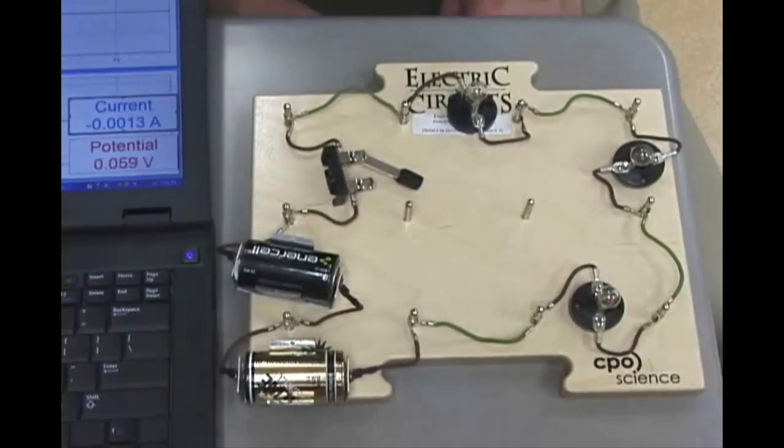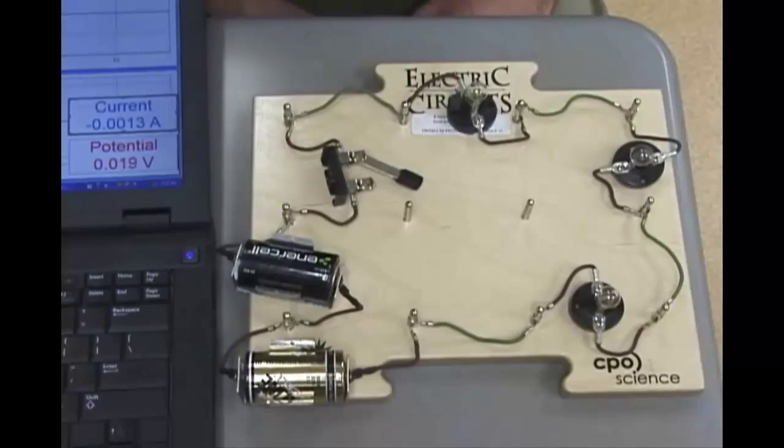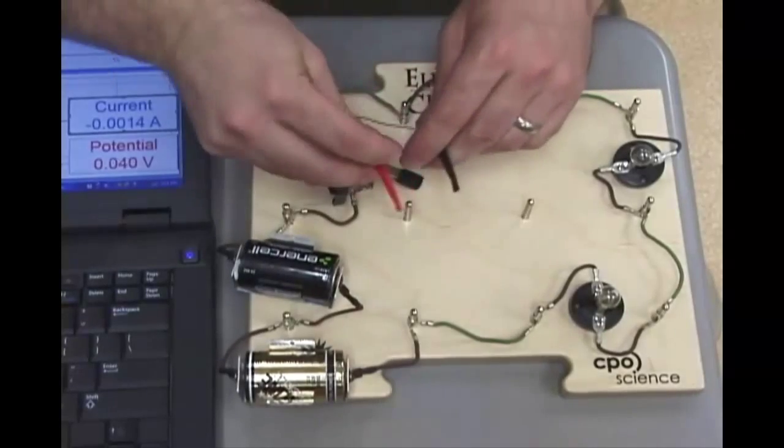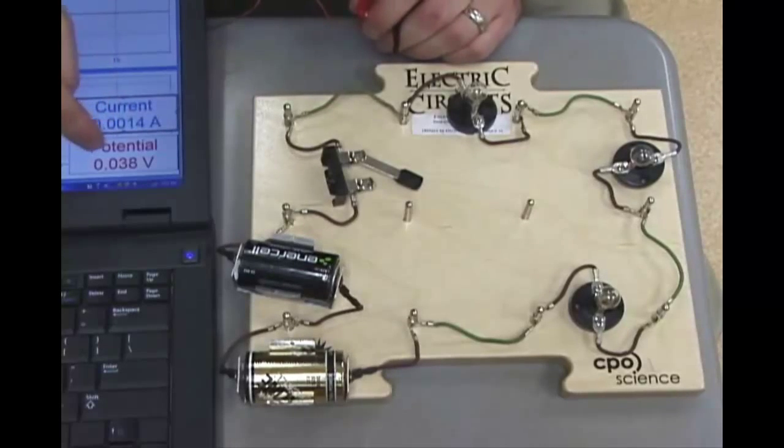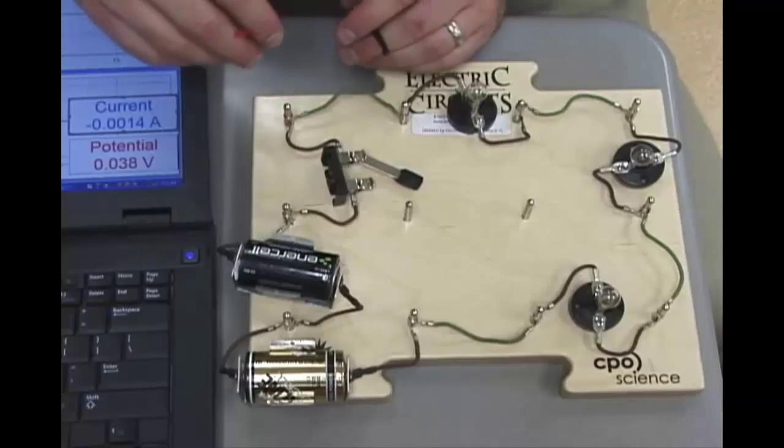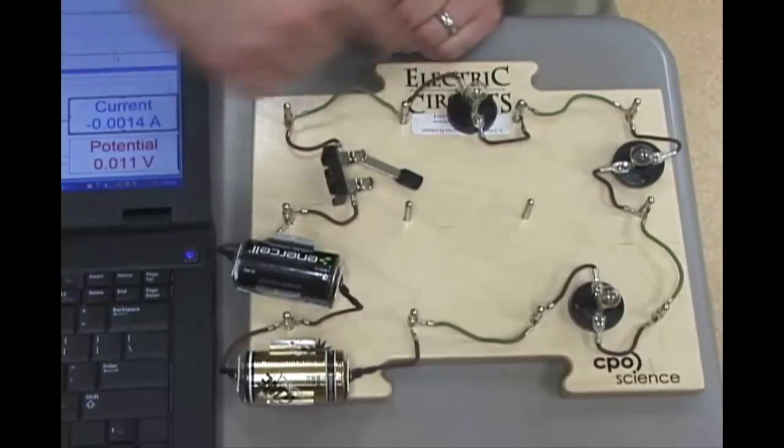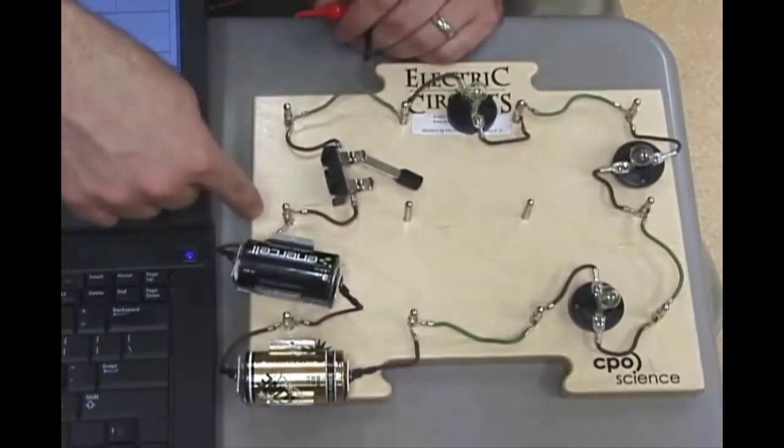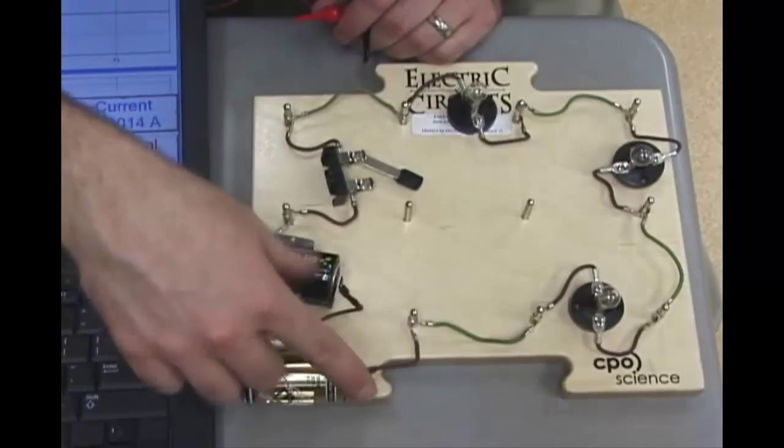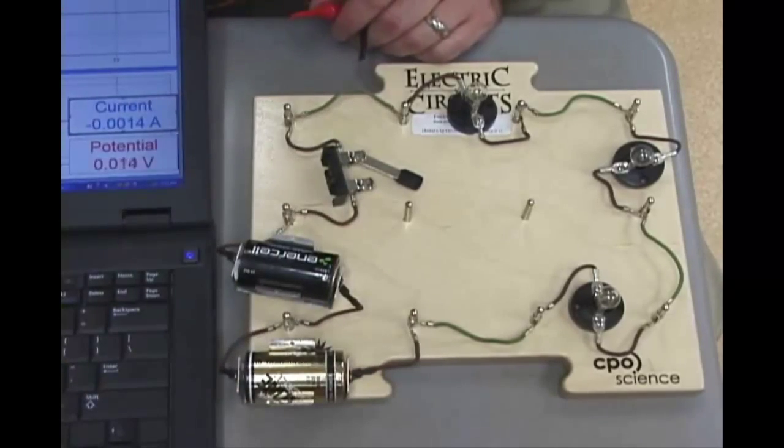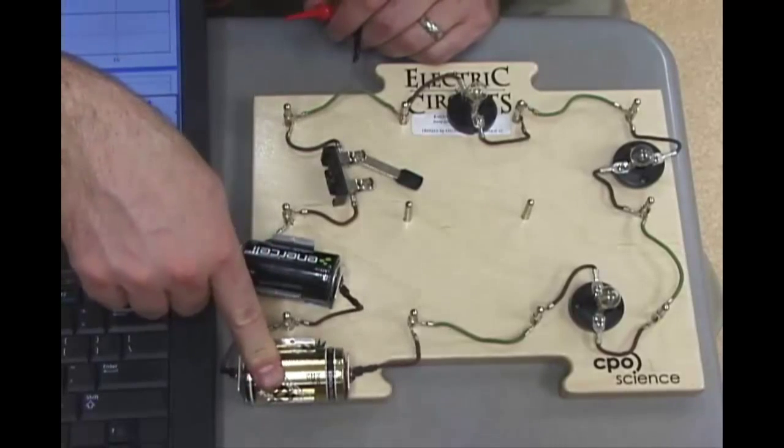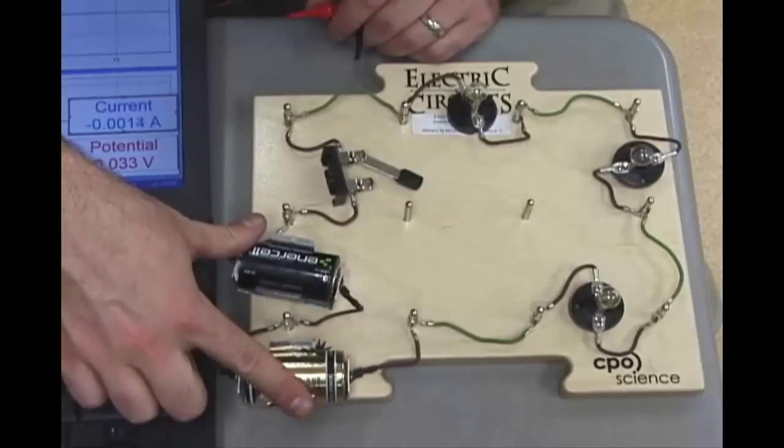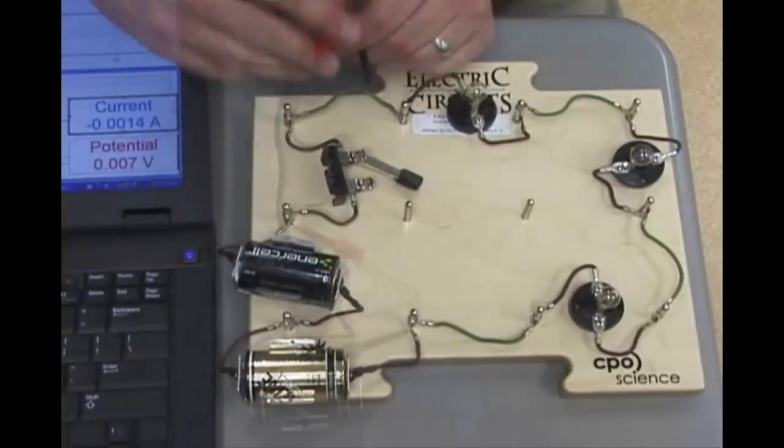So the first characteristic we're going to measure is voltage. Now I have my handy dandy digital voltmeter and it will show potential voltage right here. Currently it's reading incredibly low. But if I wanted to measure the total voltage, I could clip it here and here and measure the voltage across the batteries. But if that's a 1.5 volt battery and that's a 1.5 volt battery, what should the voltage of them together be? Let's check it out.